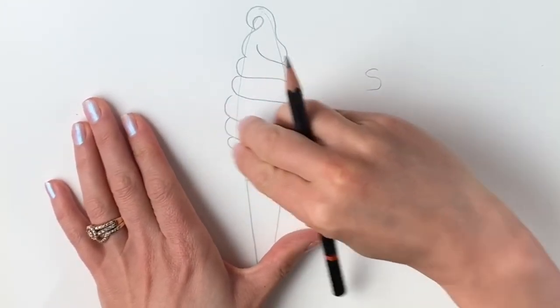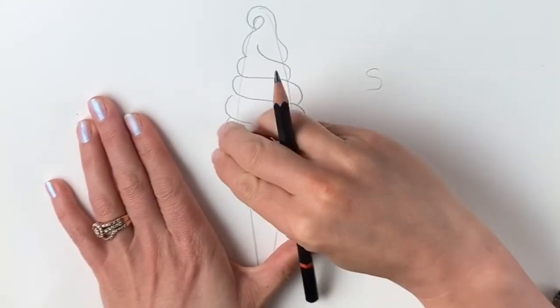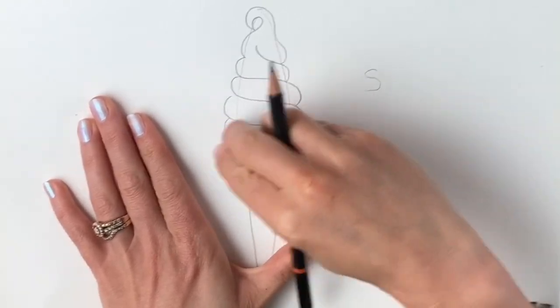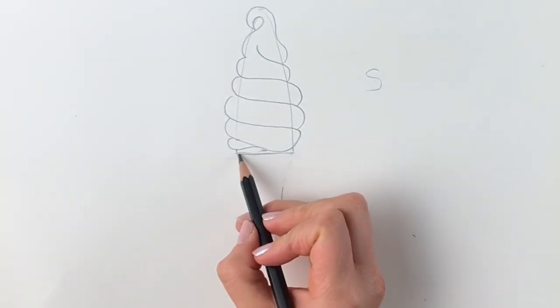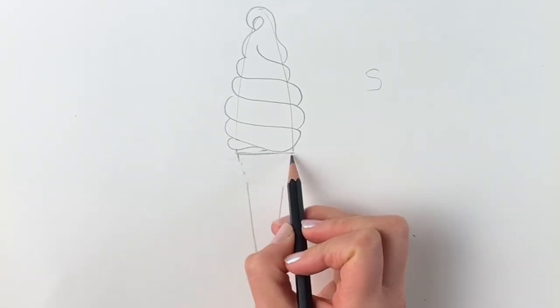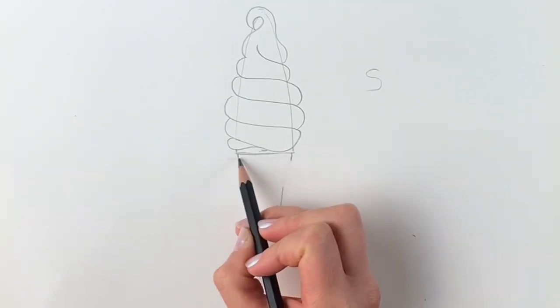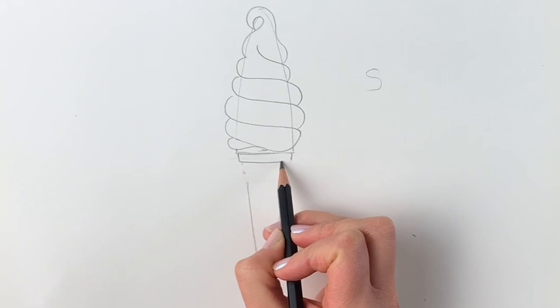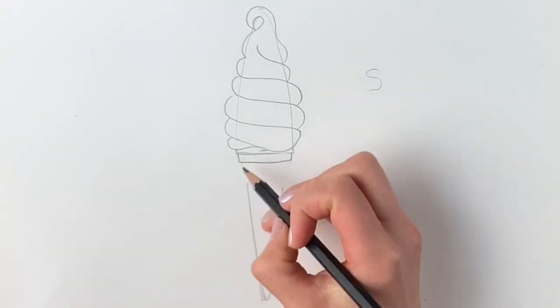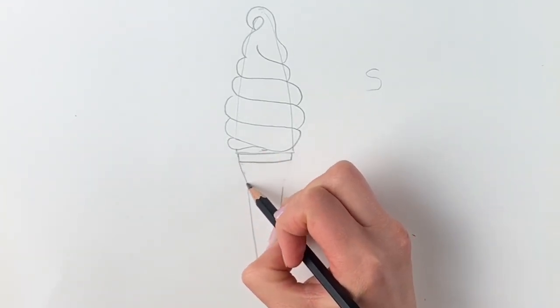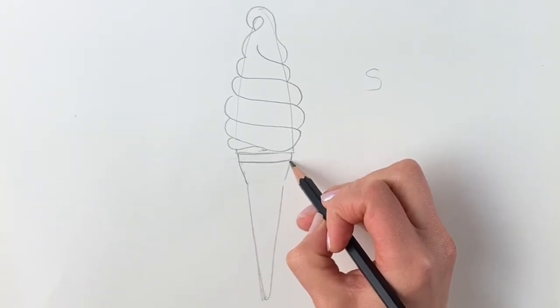We're just going to erase this little part to make it look better, this middle section of the cone. Draw a line coming down there, a line coming down there, and a line coming across. Then a line going inwards, and the same on this side.